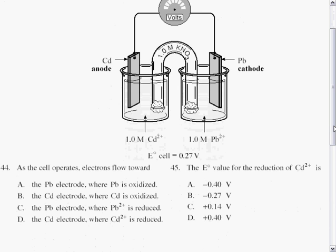As the cell operates, the electrons flow towards the lead electrode where lead is oxidized, the cadmium electrode where cadmium is oxidized, or the lead electrode where lead 2+ is reduced, or the cadmium electrode where cadmium 2+ is reduced.